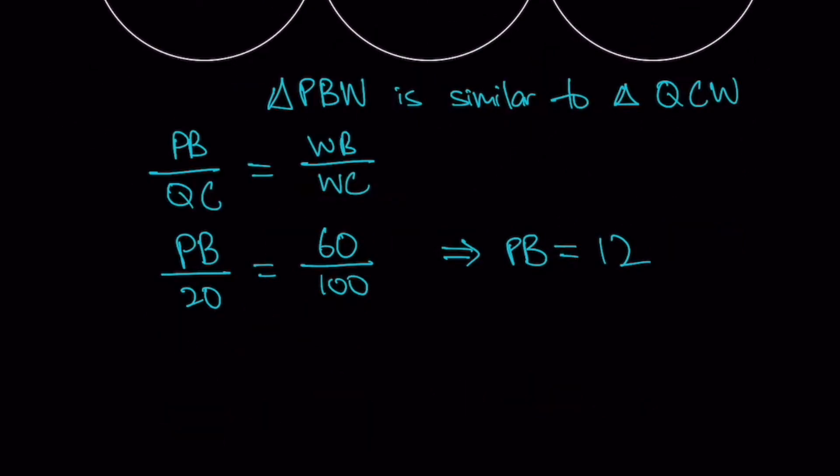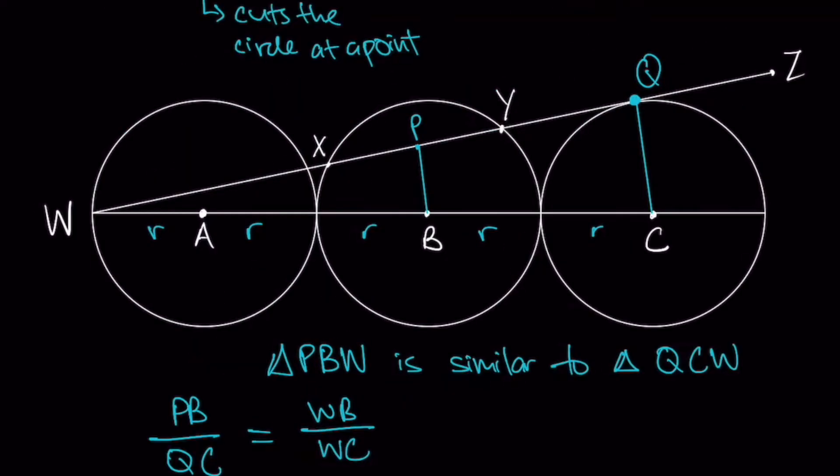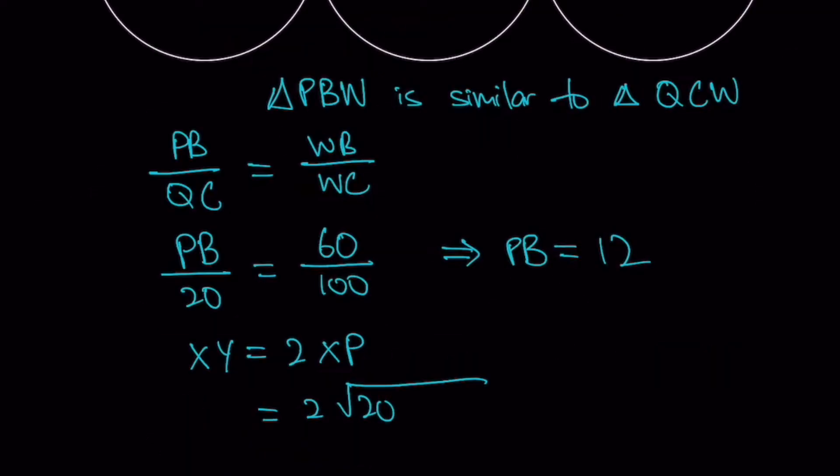Next step, since XY is equal to 2XP, since P is in the center of X and Y, we can make use of our Pythagoras theorem. Okay, I'll draw a line from X to B. You'll realize that it is a right-angled triangle. Okay, so here is 20. Here is 12. We can find XP, which is 20 square minus 12 square. And in the end, you'll get 2 times 16. Answer is 32.